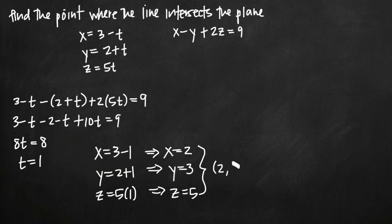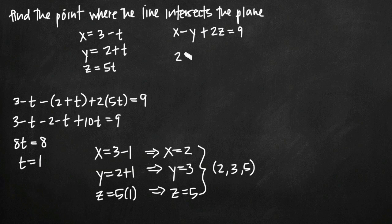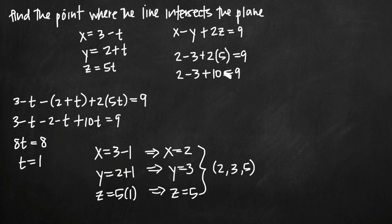This gives us the coordinate point (2, 3, 5) where the intersection occurs. To verify that we did everything correctly, we plug this coordinate point into the equation of the plane. If it satisfies the equation, we know we have a true point of intersection. Plugging in 2, 3, 5: 2 minus 3 plus 2 times 5 equals 9. Simplifying: 2 minus 3 plus 10 equals 9.